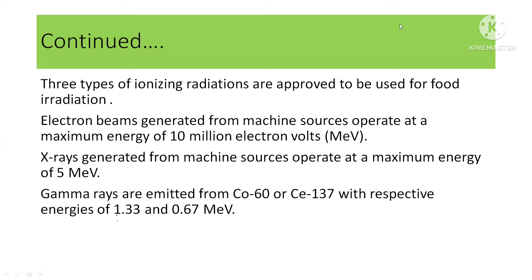Three types of ionizing radiations are approved for food irradiation: electron beams generated from machine sources operating at a maximum energy of 10 million electron volts; X-rays generated from machine sources operating at a maximum energy of 5 million electron volts; and gamma rays emitted from cobalt-60 or cesium-137 with respective energies of 1.33 and 0.67 million electron volts.